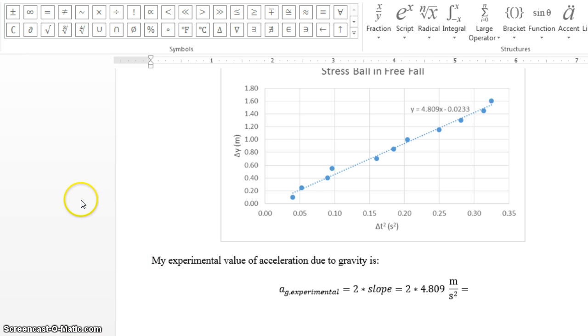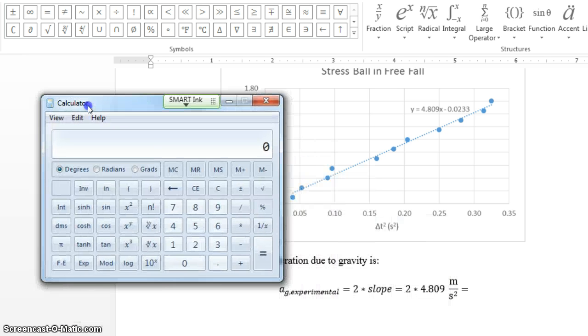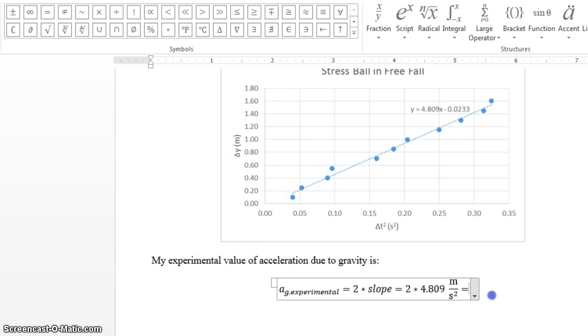Let's see. My slope is 2 times 4.809, that's 9.618. Sorry, this is my acceleration due to gravity. And then meters per second squared. So cool, fancy.